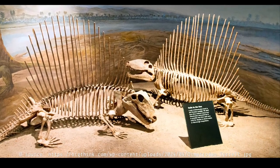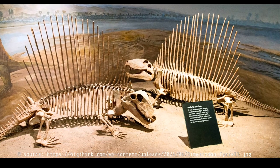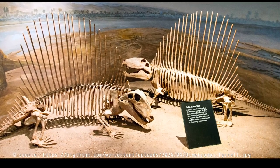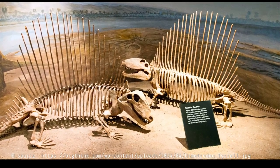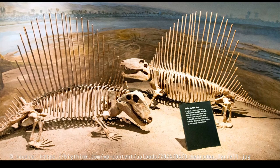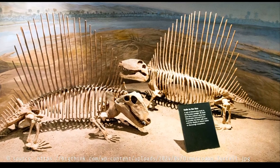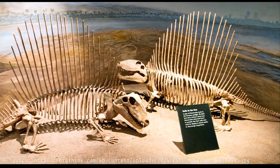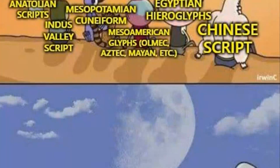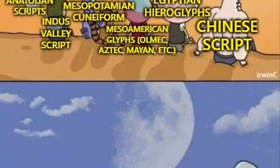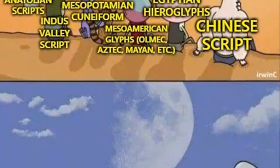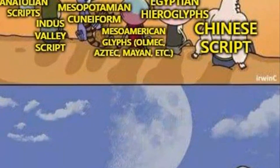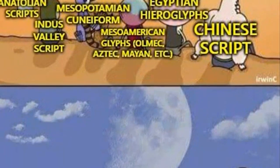It's fascinating to think that life on Earth, including us humans, didn't come about through a predetermined path. Instead, it evolved through a series of events that were miraculous, but not obligatory. When you consider the scope of the universe, the presence of life-supporting conditions on Earth was sheer serendipity.